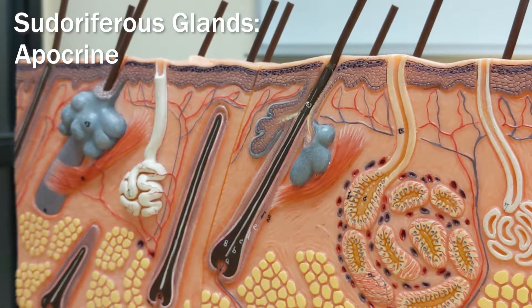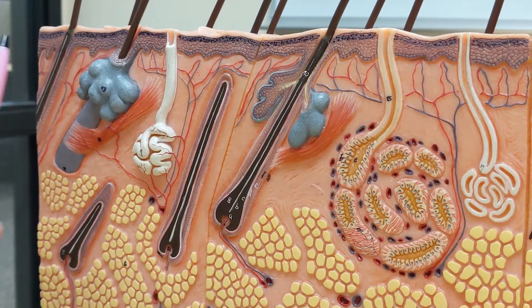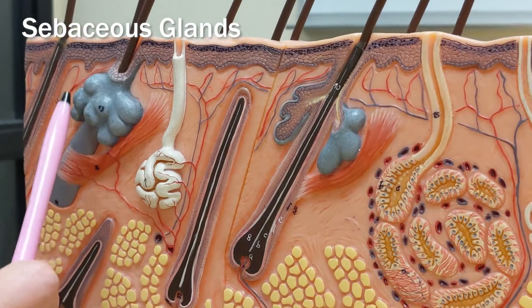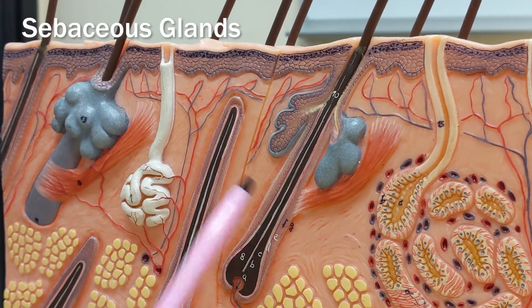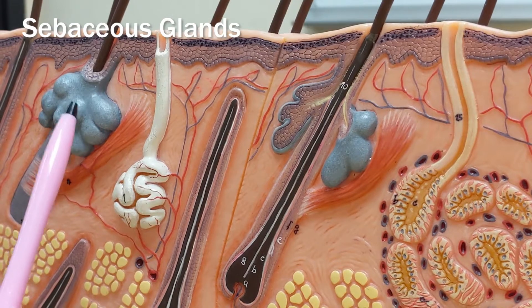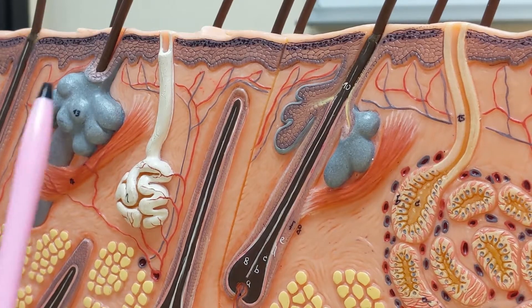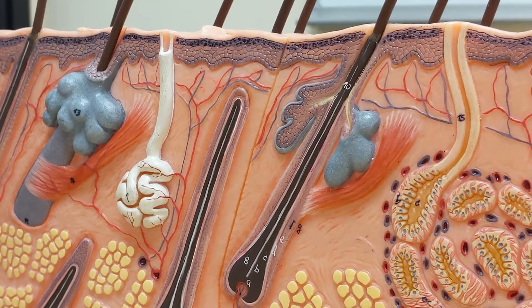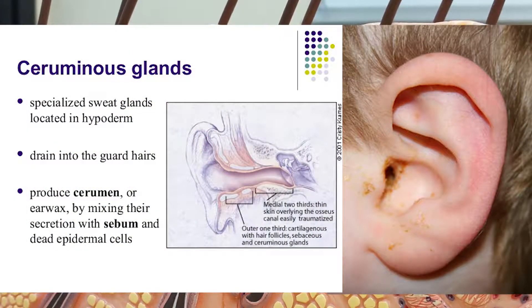Apocrine glands are found in our axillary region — your armpits — and the body's genital regions. The sebaceous gland, otherwise known as the oil gland, produces sebum, and you'll find them surrounding the hair follicles. We also have two special types of glands to remember: mammary glands are actually modified sweat glands that produce milk, and ceruminous glands make cerumen, or what we call earwax.